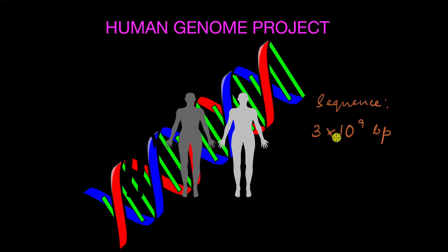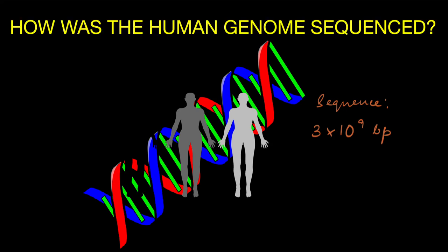How did they succeed in sequencing that many base pairs of genetic material? So how was the human genome sequenced? That's what we will take a look at in this video.